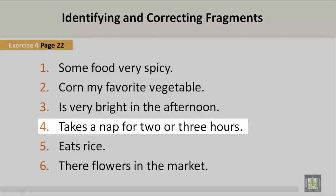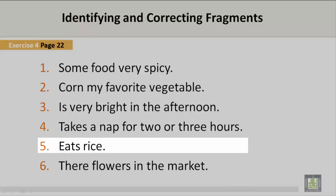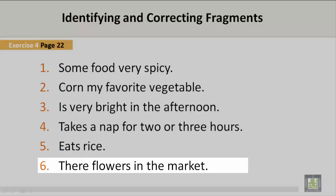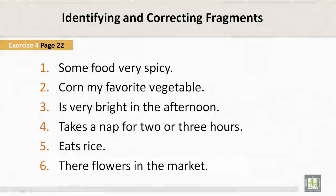Number four: 'Takes a nap for two or three hours.' This is incorrect. Number five: 'Eats rice.' This is incorrect. Number six: 'There are flowers in the market.' This is incorrect. Now let's take a look at the correct examples of each of these sentences.